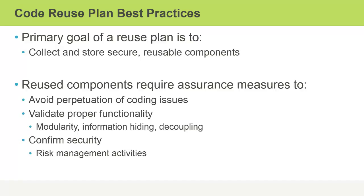Reusable components require a level of assurance that's beyond normal applications. One reason for that is you want to avoid perpetuating coding issues. If you're writing a single application and you have an error in it, it will affect only that application. But if you have a code component used in five applications and that component has a bug, it will affect all five applications.